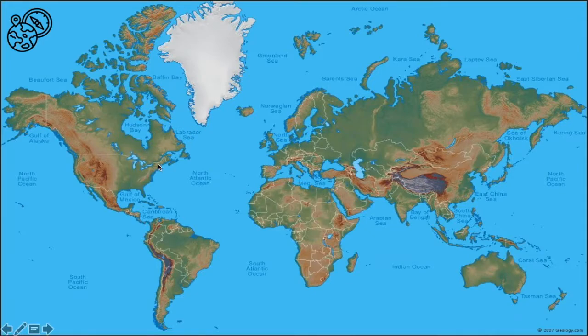We can also see lakes. For example, these are the Great Lakes of America. We can see rivers. Let's look at the rivers here in South America, as well as the Nile River here in Africa.